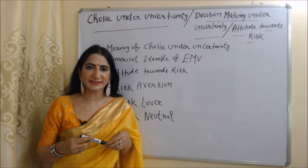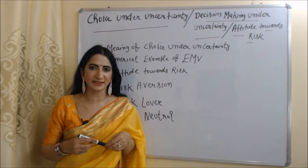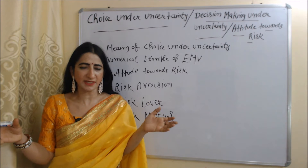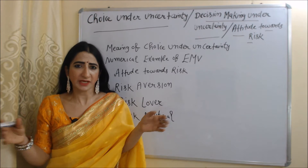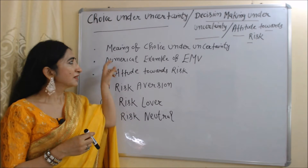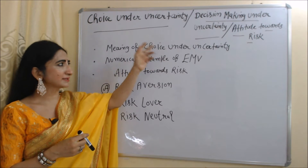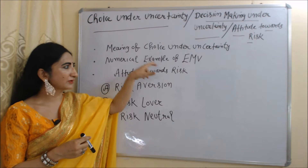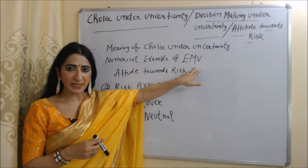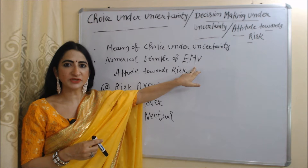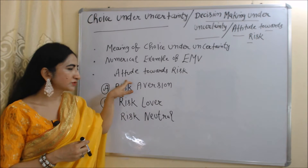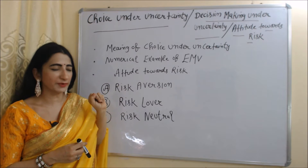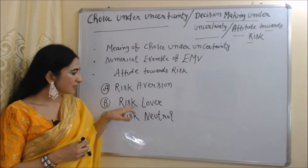Hello everyone, my name is Minni Sati. I hope you all are staying healthy. Today we are going to talk about decision making under uncertainty and attitude towards risk. The topics we will cover today include choice under uncertainty, a numerical example of calculating EMV — the Expected Monetary Value — and attitude towards risk, covering three types of risk preferences: risk aversion, risk lover, and risk neutral.